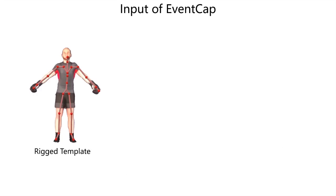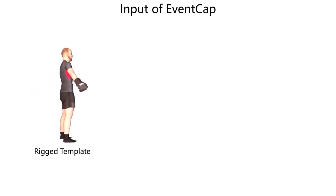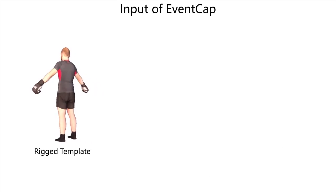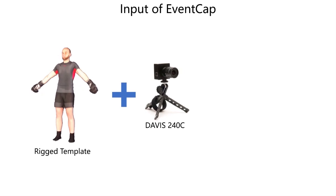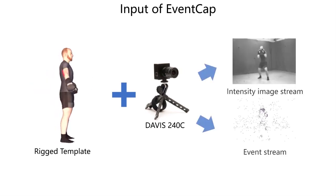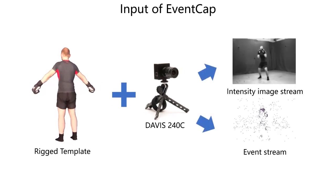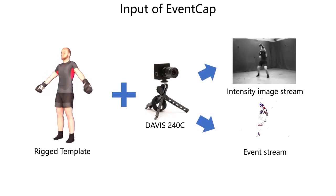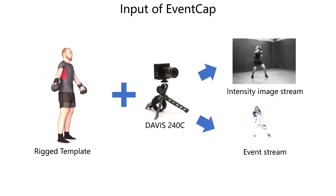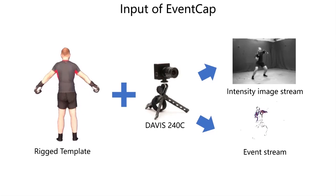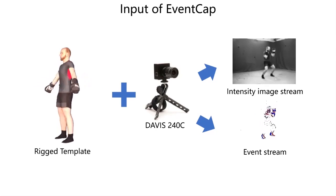Our method relies on a scanned template model of the actor, as well as the hybrid input from the event camera, including a low frame rate intensity image stream and an event stream of extremely high temporal resolution.